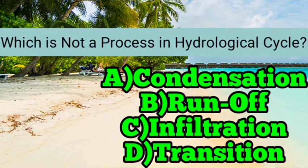The next question asks which is not a process in the hydrological cycle. The correct option is D — transition is not a process in the hydrological cycle, whereas condensation, run-off, and infiltration are all related to the hydrological cycle.